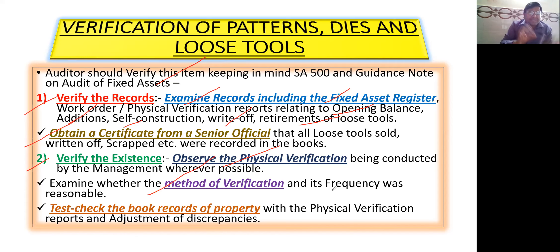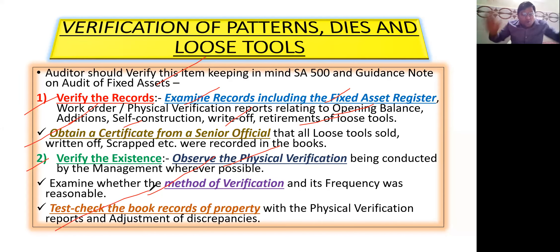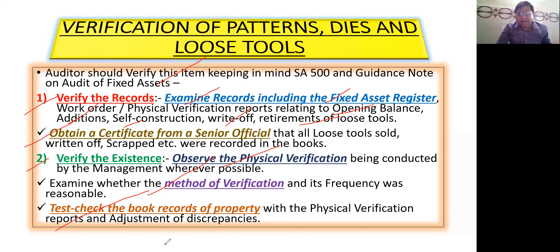The auditor will examine whether the method of verification and its frequency was reasonable. He will test-check the book records of property with the physical verification reports and note adjustment of discrepancies. He takes a sample item and checks its book records from start to last entry, then physically verifies it. So records need to be verified first, then existence — not just in the books but physically too.